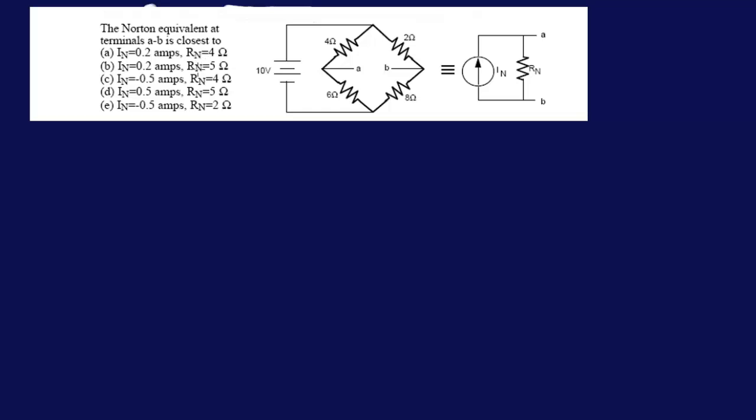We have AB here, so these two - the 4 and 6 - are in parallel, and 2 and 8 are in parallel because of this terminal over here.